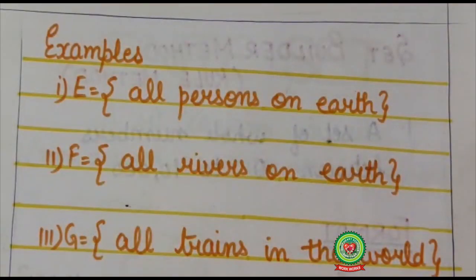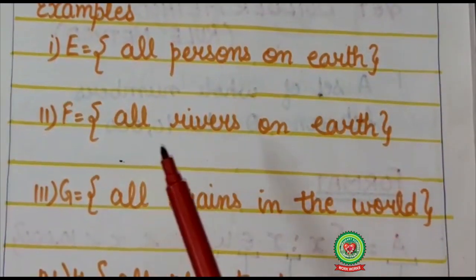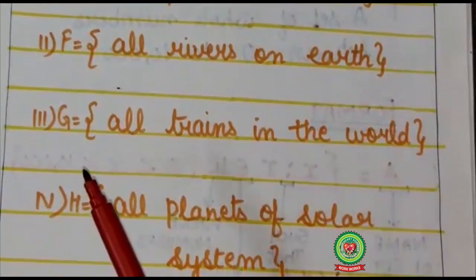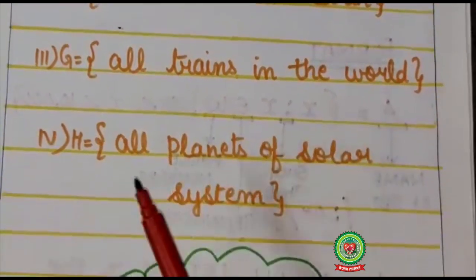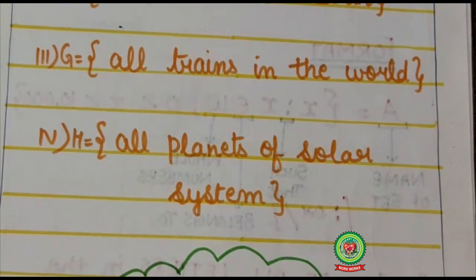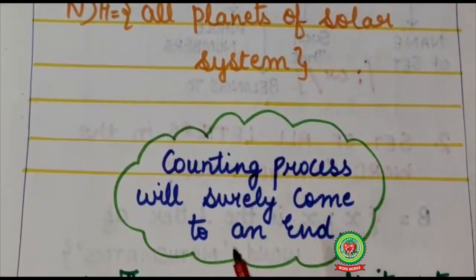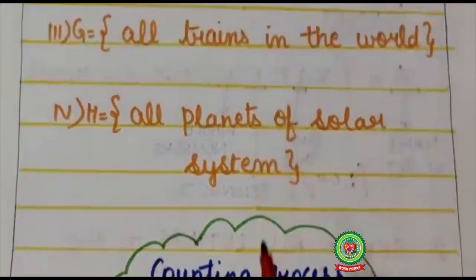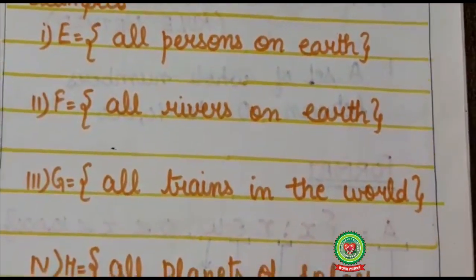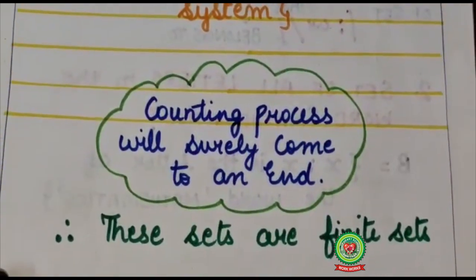Now here I am having some examples like E: All persons on earth. F: All rivers on earth. G: All drains in the world. H: All planets of solar system. Now as you can see, sometimes we cannot count the objects of set but we know that counting process will surely come to an end. With these sets counting process will surely come to an end. And therefore, these sets are finite sets.